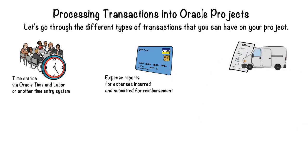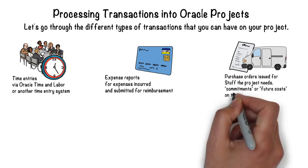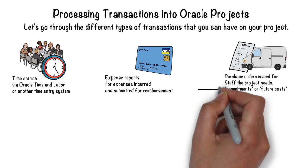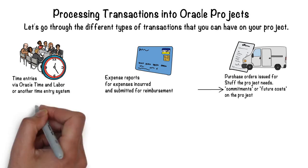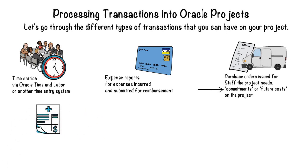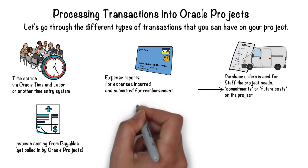And then we have the actual purchasing process. Any sort of POs or purchase orders that have been issued for stuff that you need for your project would come in as future costs on your project. We call those commitments in projects. Once the goods have been received and the vendor gives you an invoice, those costs are also going to come in through payables, and projects will pull all of those expenditures from AP in order to include them in the costs of the project.